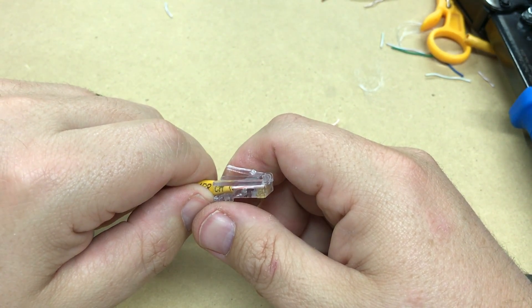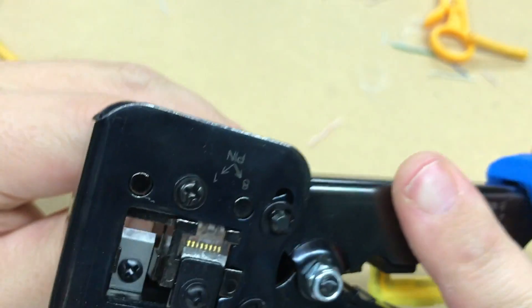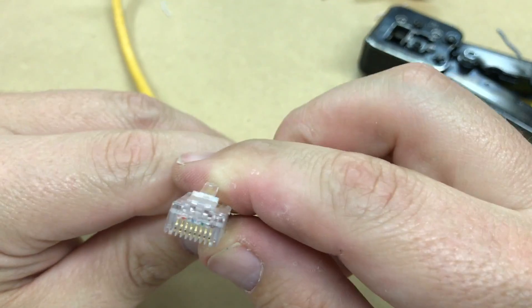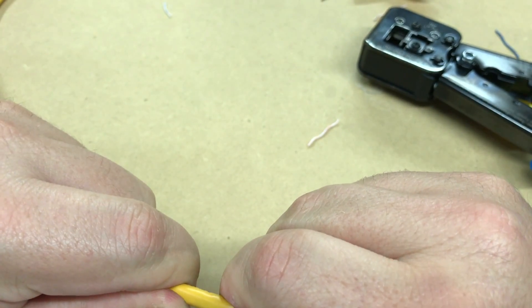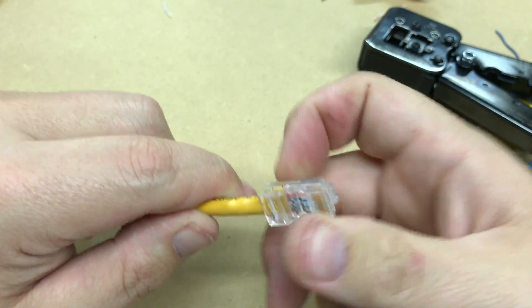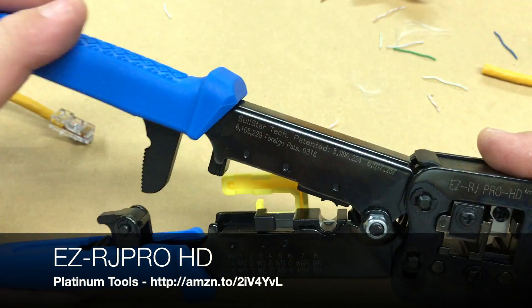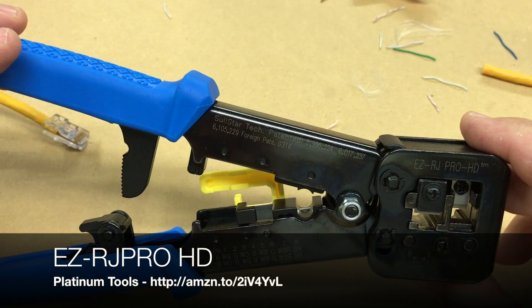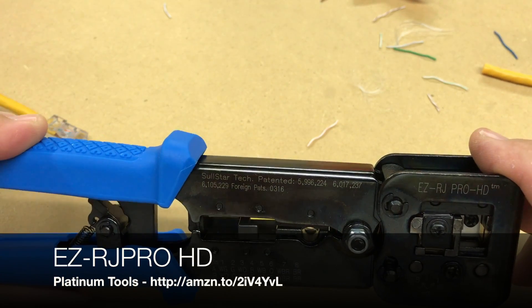But what the hell, we'll do it. Now what's cool is with this special crimper, it'll work on old ones too. So all good to go - does a nice crimp, everything's nice and even. And again, pulling on it, nice and tight.